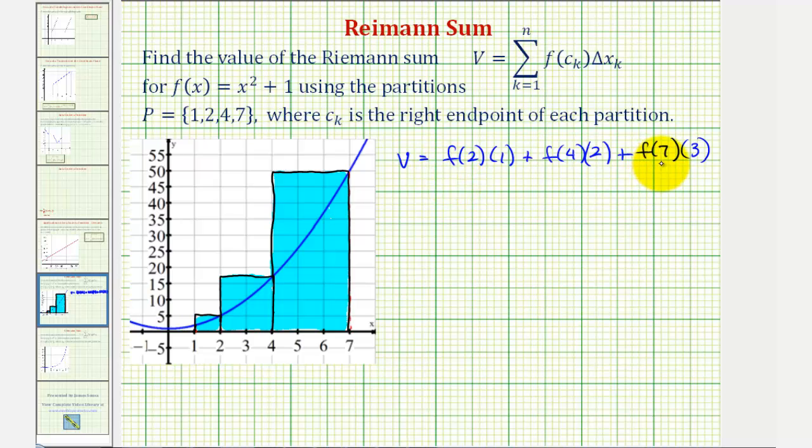Now we'll determine these function values using f(x) = x² + 1. So f(2) would be 2² + 1, or 5. So we have 5 times 1, plus f(4) would be 4² + 1, or 16 + 1, or 17, times 2, plus f(7), that'd be 7² + 1, or 49 + 1, that's 50, times 3.